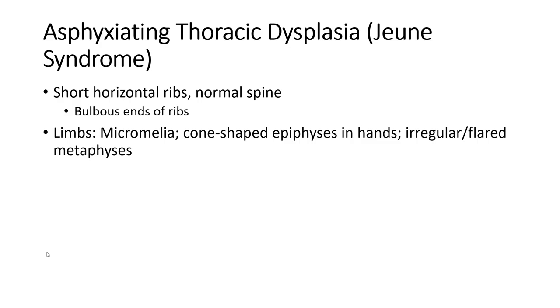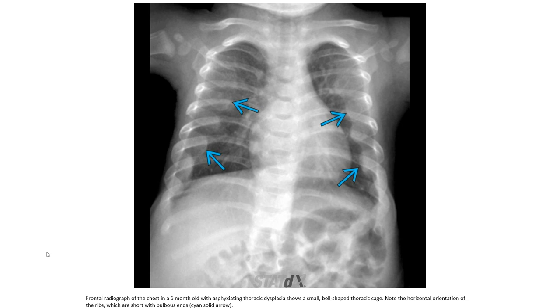This is an example of campomelic dysplasia. Also shown is asphyxiating thoracic dysplasia (Jeune syndrome), featuring short crescent-shaped ribs, normal spine, and micromelia with flat-shaped epiphyses in the hand. The radiograph of the chest in a six-month-old shows a small thoracic cage with short horizontal ribs that are bolus-shaped.